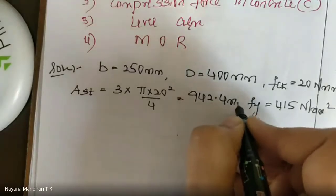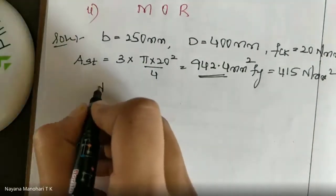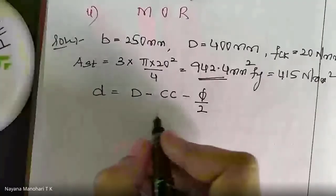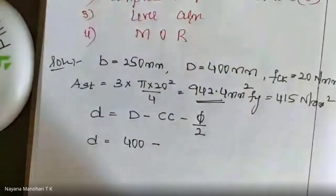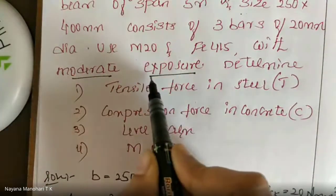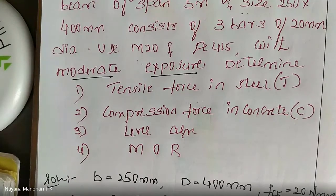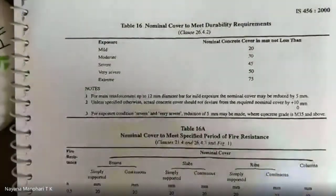AST = 942.4 mm². Next, calculate effective depth d: overall depth minus clear cover minus diameter divided by 2. The clear cover is not directly assumed here because the problem has specified moderate exposure condition. Refer to IS 456:2000, where nominal cover is specified for different exposure conditions in Table 16, page number 47.